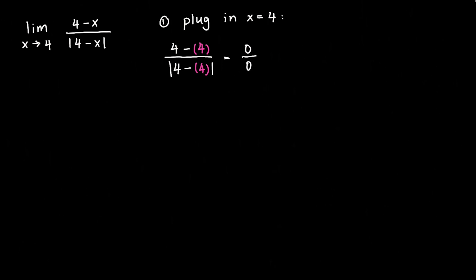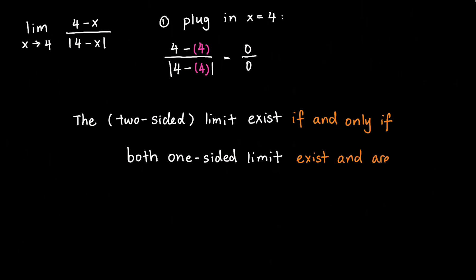But one thing to remember for the absolute value is that the limit, the two-sided limit, only exists if and only if both one-sided limits exist and are equal. Let me write that down. Okay, they exist and are equal to each other.